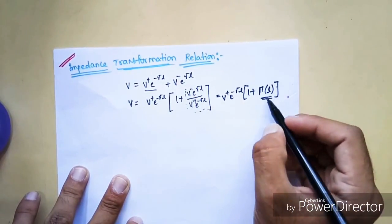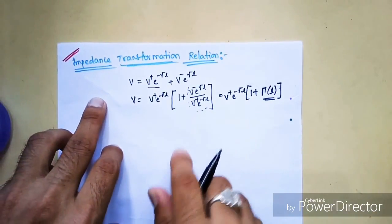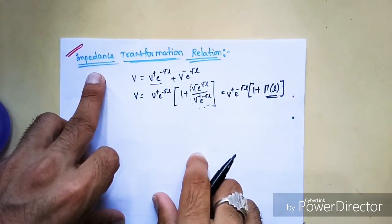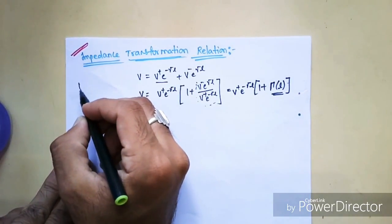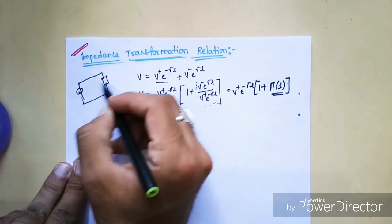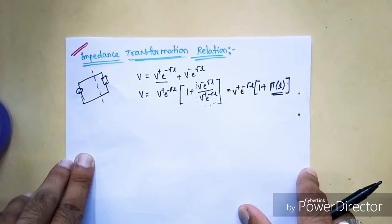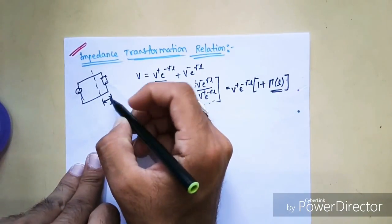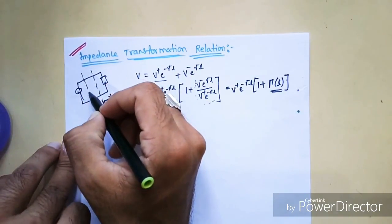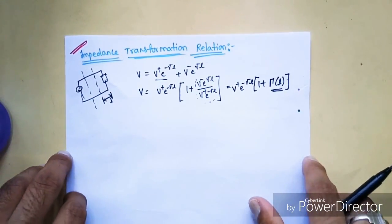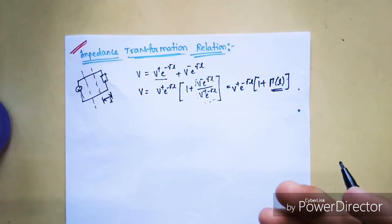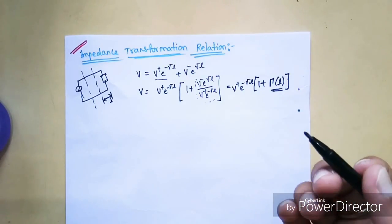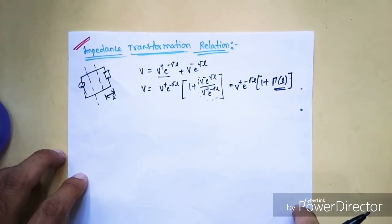This indicates the reflection coefficient at any length. Before doing the derivation, everyone should know what is meant by impedance transformation relation. Suppose you are given a network with a load or impedance at a certain length l, and you are asked to find the impedance at another length l. To find impedance at another point, you can use this impedance transformation relation to easily evaluate it at any given or asked point.